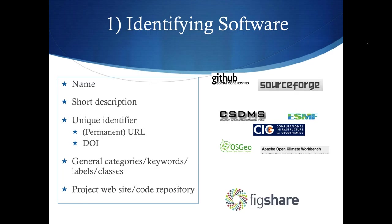The first category is to identify the software: its name, a brief description, unique identifiers so you can know this is the software that a paper cited, and general categories and keywords. You may also specify the project website or code repository where the software lives. These things help ensure that if you're using a piece of software called 'gold,' it's actually the piece you were looking for.